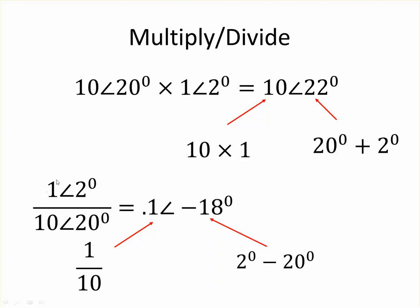For divide, you divide the magnitude. So a magnitude of 1 divided by a magnitude of 10 is a magnitude of 0.1. We now subtract the phase. So we take 20 away from 2 and we get minus 18.